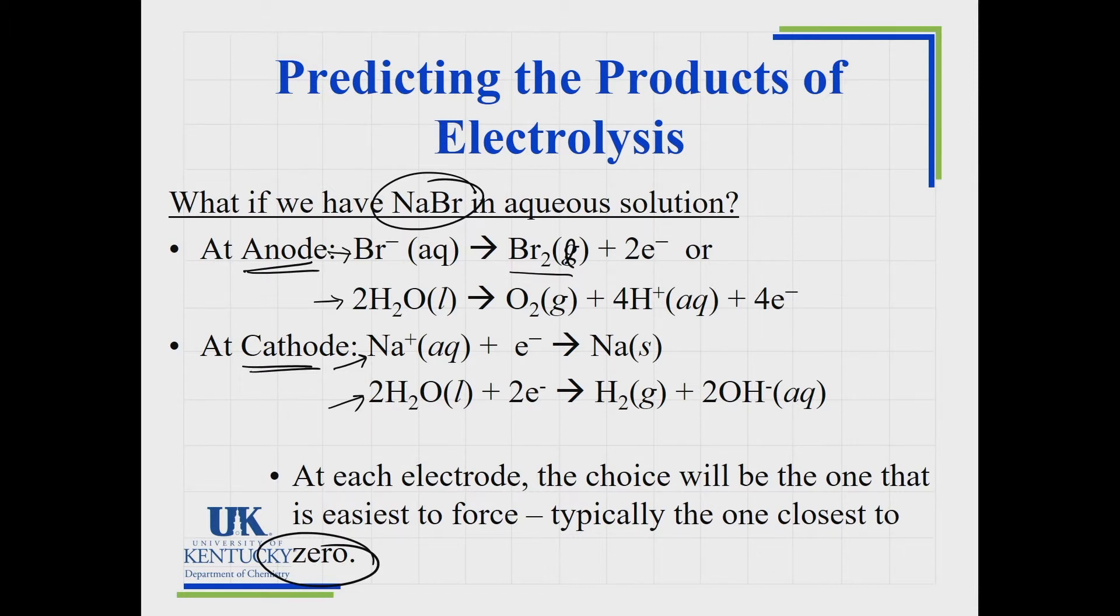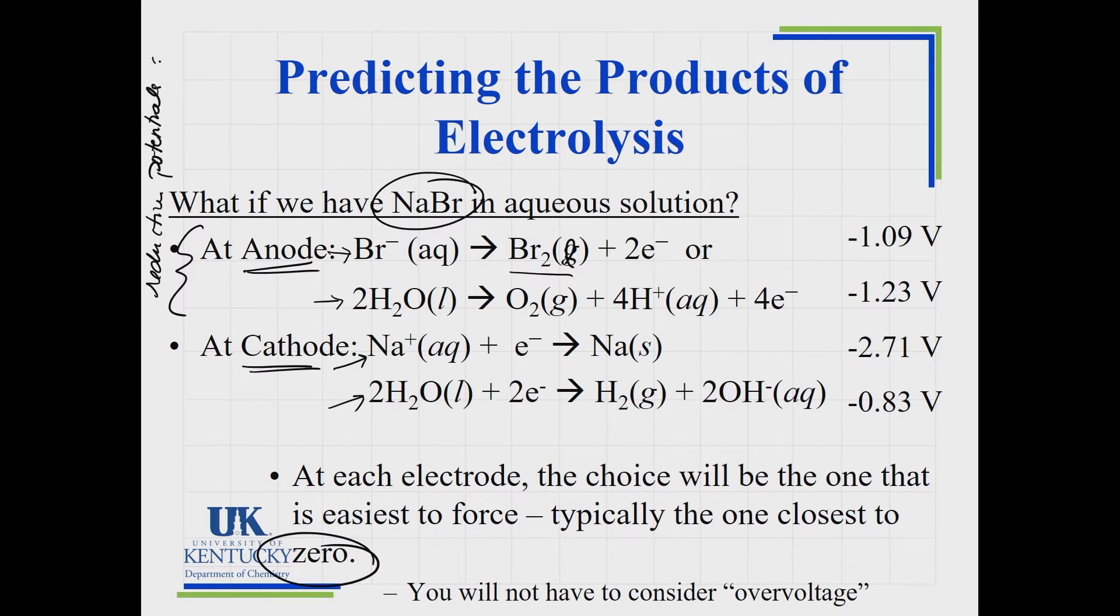I went to a table of reduction potentials. At the anode, these are oxidation, so I found the reaction, but it was the reverse. When I go to my tables, they are all reduction potentials. But these reactions are oxidation. So I took the value and I changed the sign. Which one's closer to zero? Well, this one is closer to zero. So rather than water being oxidized, the Br⁻ would be oxidized and you would be forming some bromine. At the cathode, we would compare these two values. We have to force the electrons to do what it doesn't want to do spontaneously. The one that has the closest to zero voltage is the one that's going to be easier to force. In this case, you would get the hydrogen gas generated.